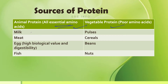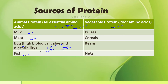Examples of animal protein are milk, meat, egg, fish, etc. Egg is a very important source of protein because it contains high biological value and digestibility. It is a rich source of protein and essential amino acids.